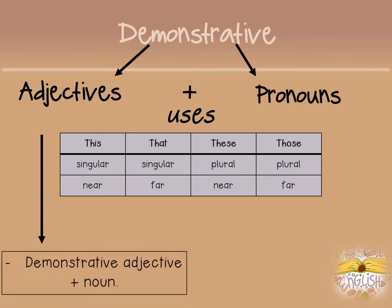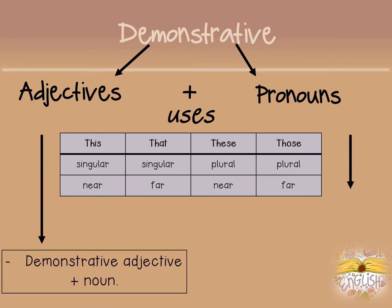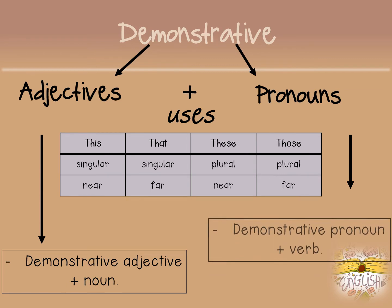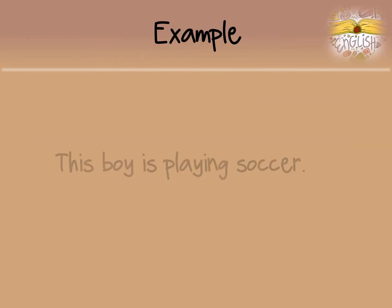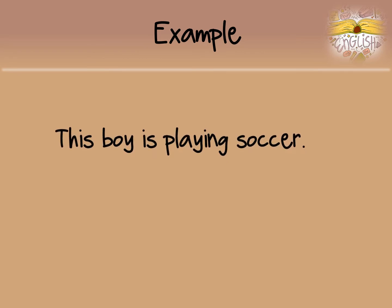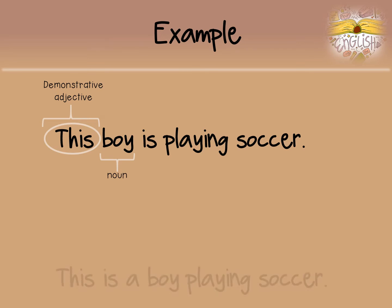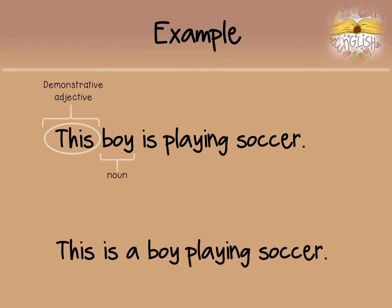A demonstrative adjective is followed by a noun, and demonstrative pronouns are followed by a verb. For example, 'This boy is playing soccer' — this is a demonstrative adjective because it's followed by the noun 'boy.' 'This is a boy playing soccer' — this is a demonstrative pronoun because it's followed by the verb 'is.'